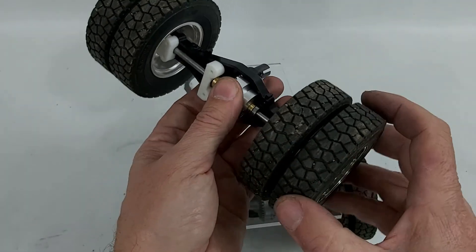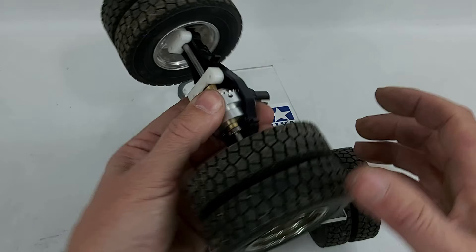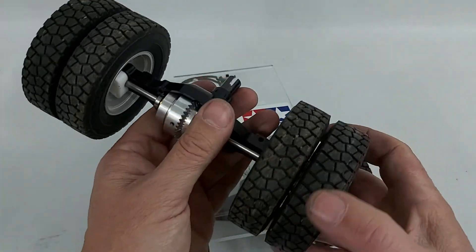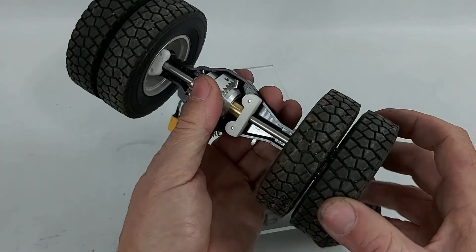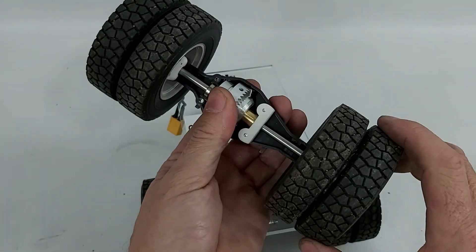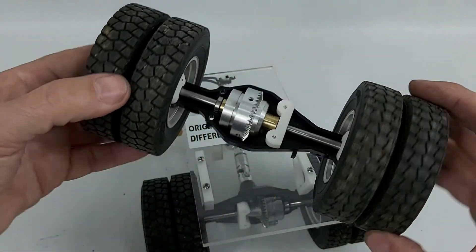If we hold the differential we can't turn anyway. With this wheel, we see it's free. But if we hold it, the wheel doesn't move. It gets blocked.